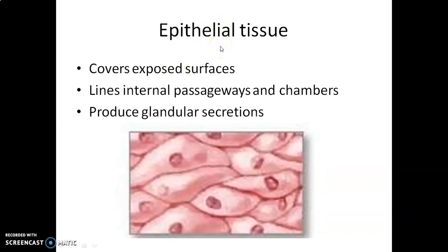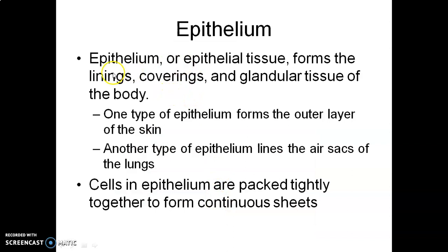The next type is epithelial tissue. It is the outermost layer of our skin. It covers and exposes surfaces, lines internal passageways and chambers, and produces glandular secretions. Epithelial tissue forms the linings, coverings, and glandular tissues of the body. One type forms the outer layer of skin; another type lines the air sacs of the lung. Cells in epithelial tissue are packed tightly together to form a continuous sheet.